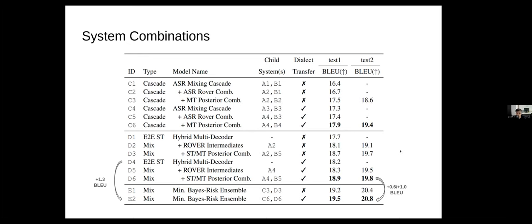Finally, I'm showing here all of our systems that we submitted to the shared task. You can see that our best system overall came from the Bayes risk ensemble, reaching 20.8 BLEU on the blind test two. This represented a 0.6 to 1 BLEU gain over our best non-Bayes risk ensemble model, and this also represents a 1.3 BLEU gain over our single best system shown here.